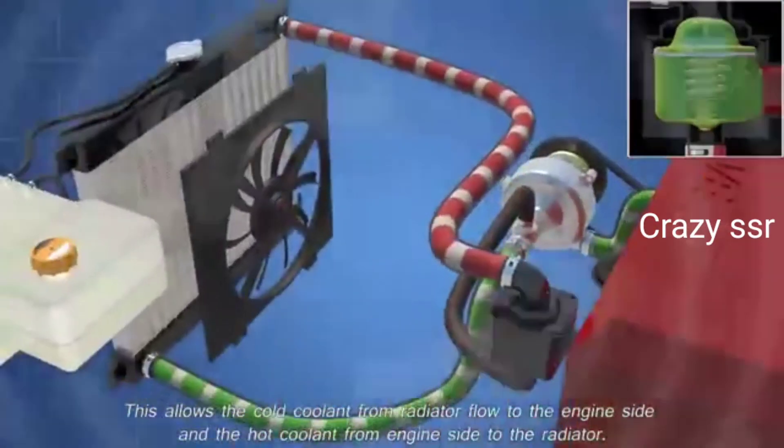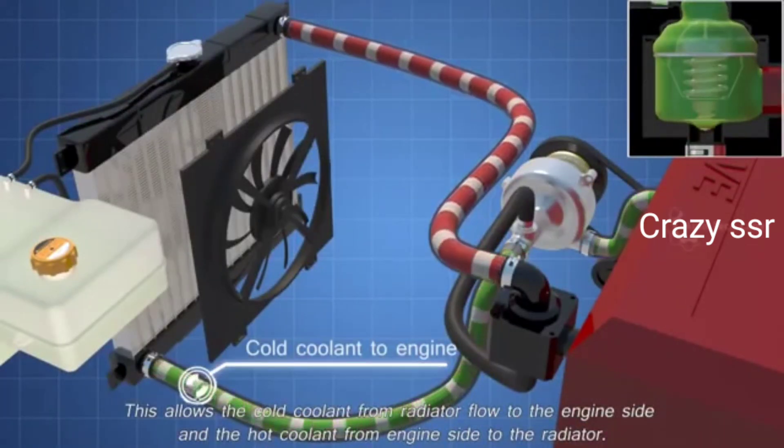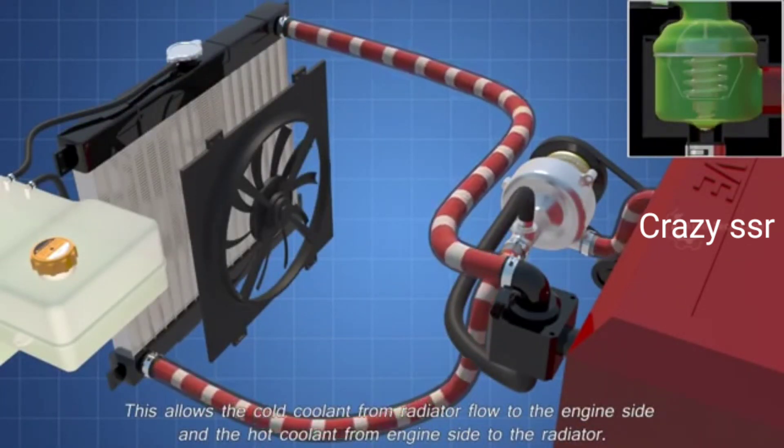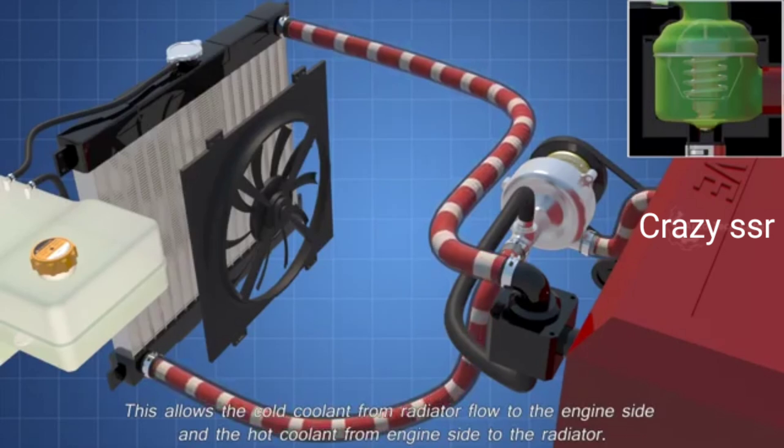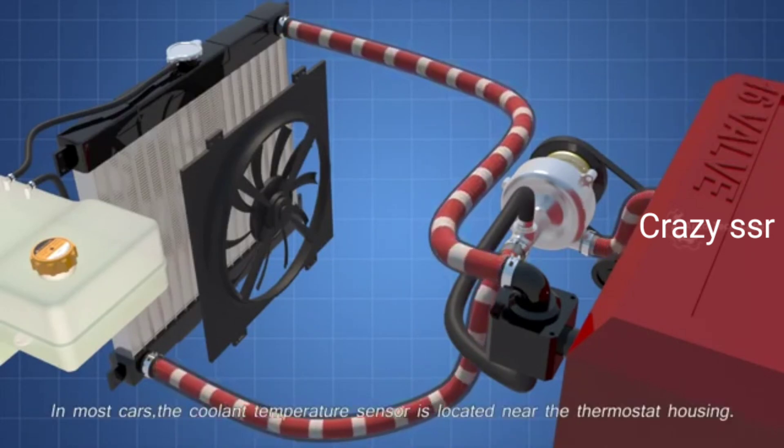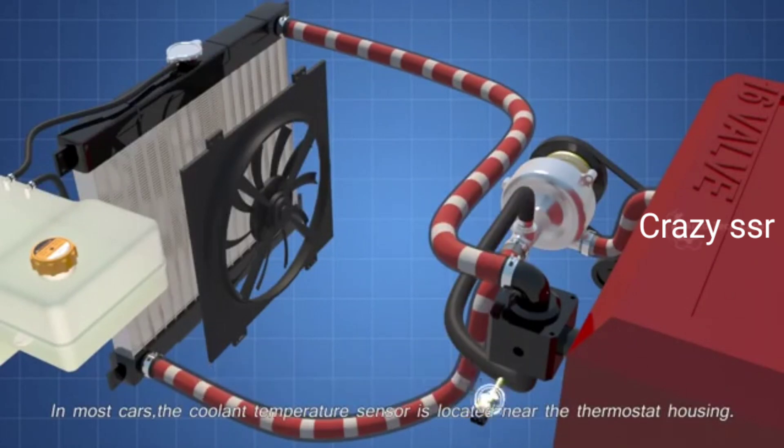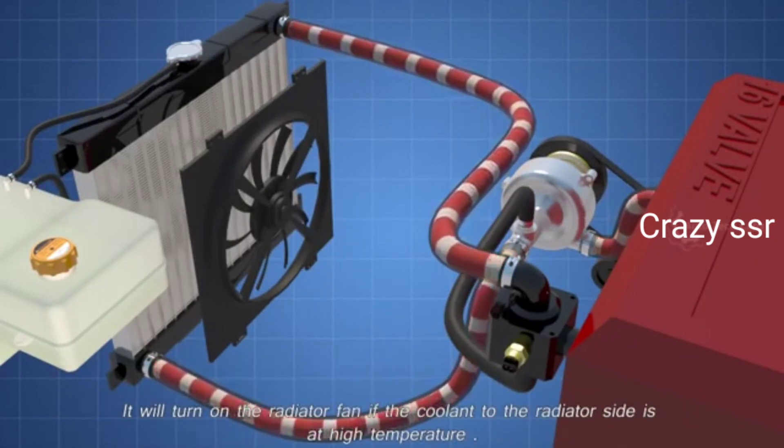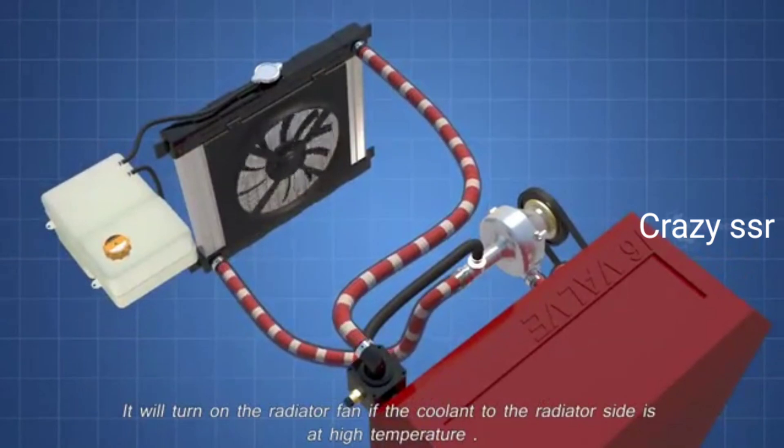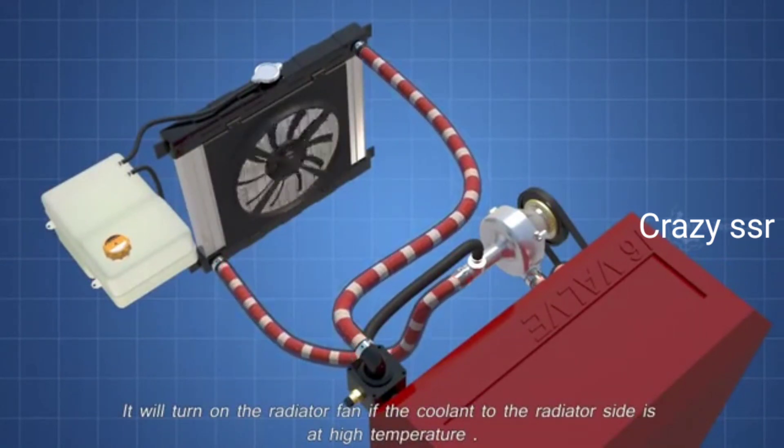This allows the cold coolant from radiator to flow to the engine side, and the hot coolant from engine side to flow to the radiator. In most cars, the coolant temperature sensor is located near the thermostat housing. It will turn on the radiator fan if the coolant to the radiator side is at high temperature.